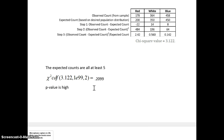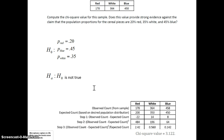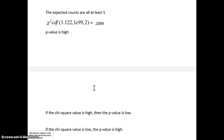Running this test at a 5% significance level, 0.2099 is much higher than 0.05. The p-value is high, so we do not reject the null. We do not accept the alternative. The alternative was the claim that H₀ was not true — that those proportions were not correct — but we're not accepting that claim because the p-value was high.